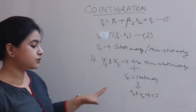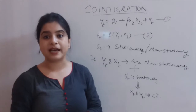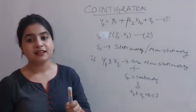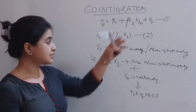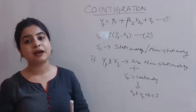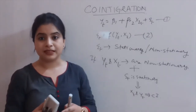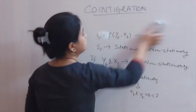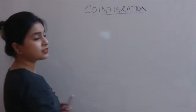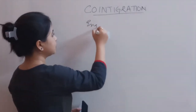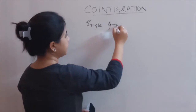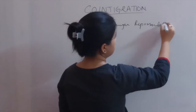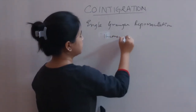This concept of co-integration was first proposed by Granger in the year 1981. Engle was also involved in developing this concept, and together they presented a theorem known as the Engle-Granger Representation Theorem.